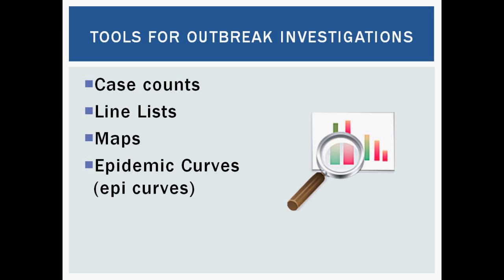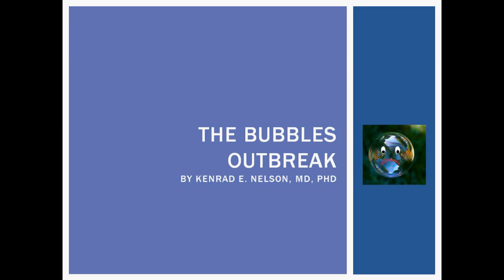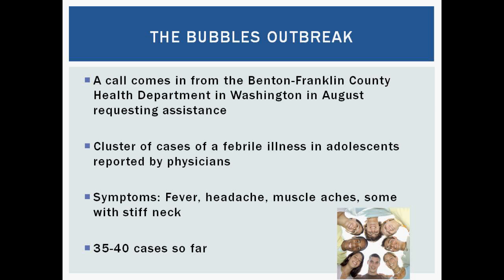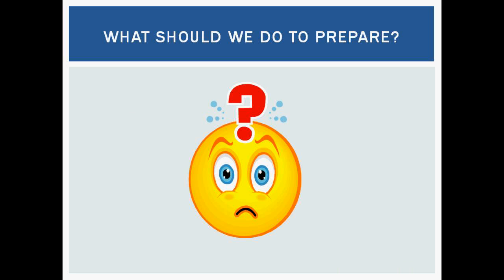Let's jump right into our first investigation — it's the Bubbles outbreak. A call comes in from the Benton Franklin County Health Department in Washington State in August, requesting assistance because they're seeing a cluster of cases of a febrile illness in adolescents. A couple of reports are coming in from providers seeing these teenagers in their offices. The main symptoms are fever, headache, muscle aches, and some have a stiff neck. There were about 35 to 40 cases when this call came in. So what are we going to do first to prepare for this investigation?